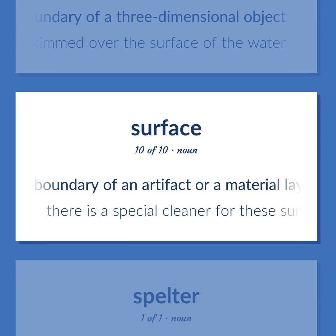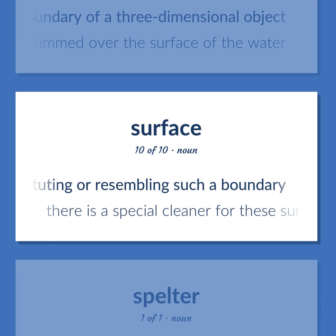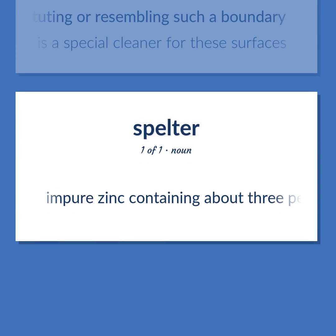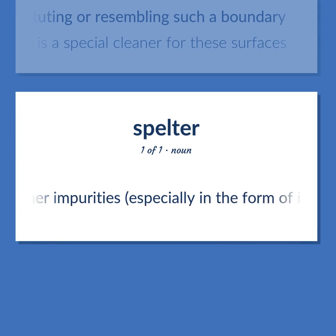The outer boundary of an artifact or a material layer constituting or resembling such a boundary — there is a special cleaner for these surfaces. Impure zinc containing about 3% lead and other impurities, especially in the form of ingots. Become our student and get access to effective and free educational materials. Subscribe to our YouTube channel to become a part of our growing community and to learn English effectively.